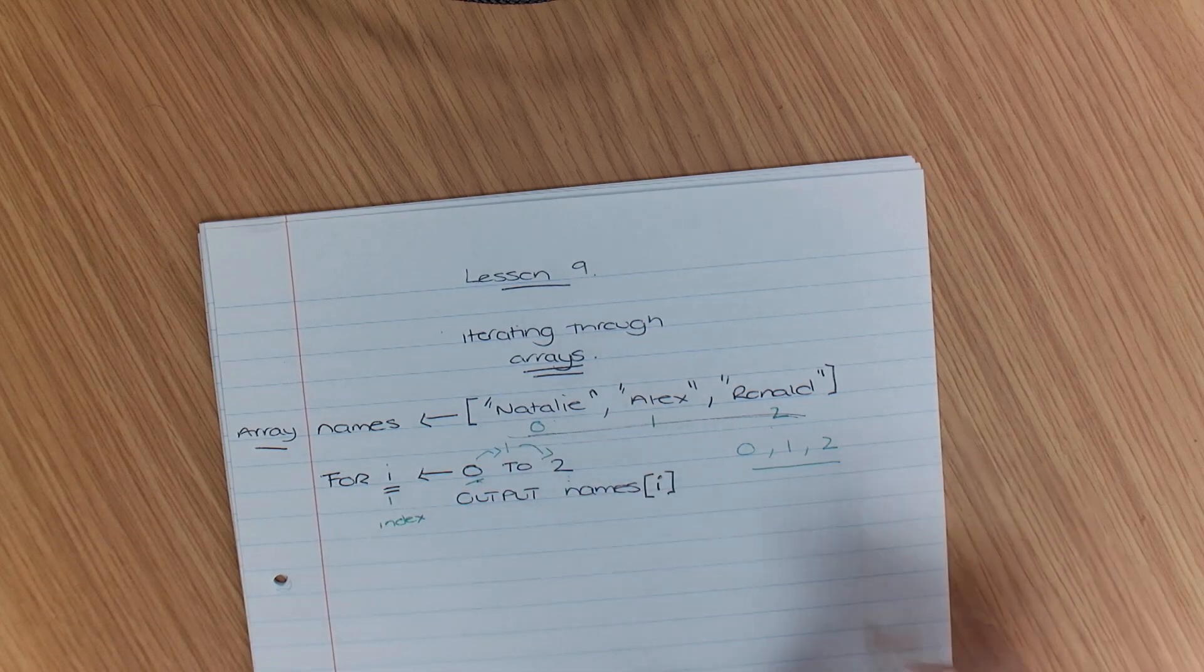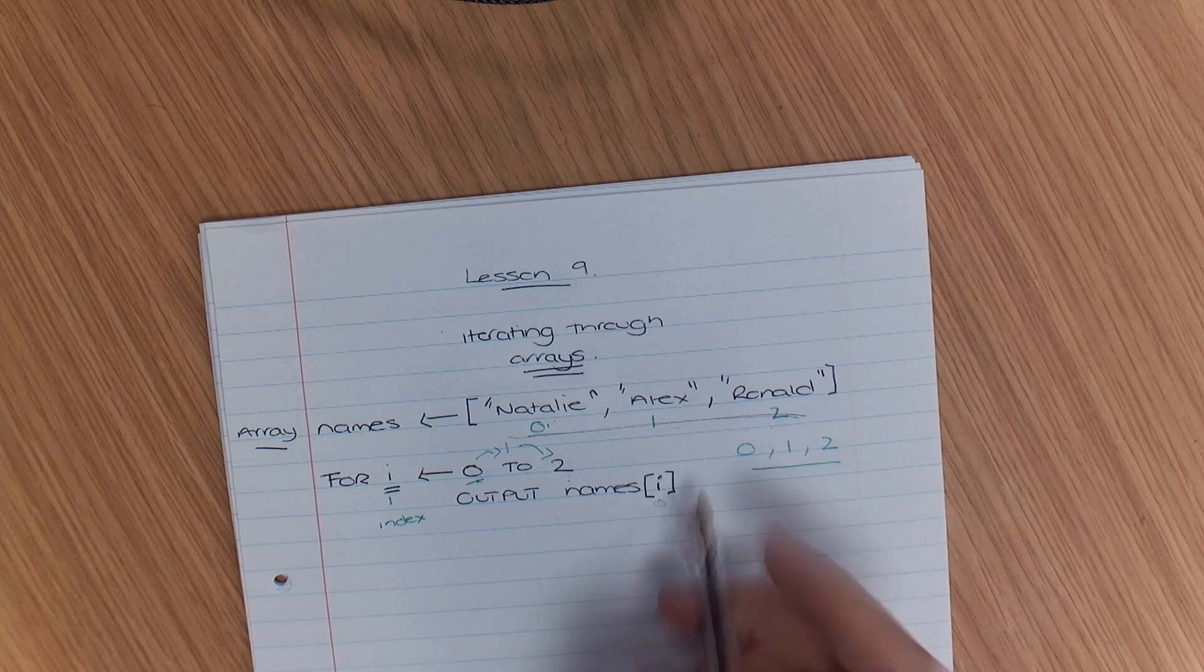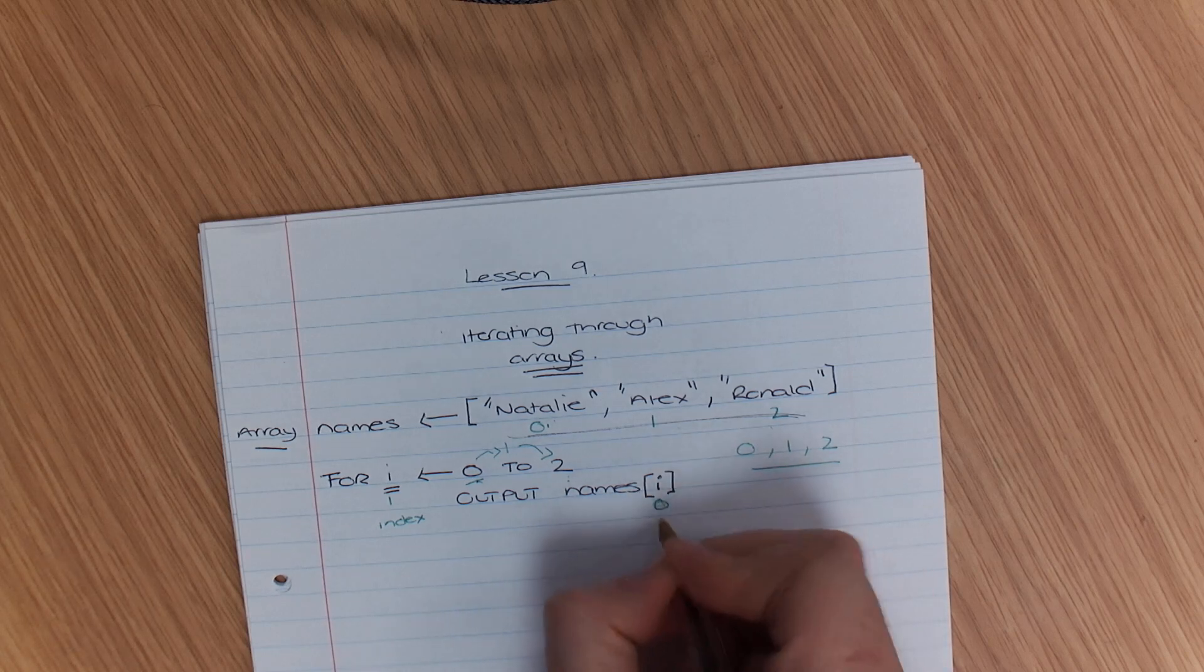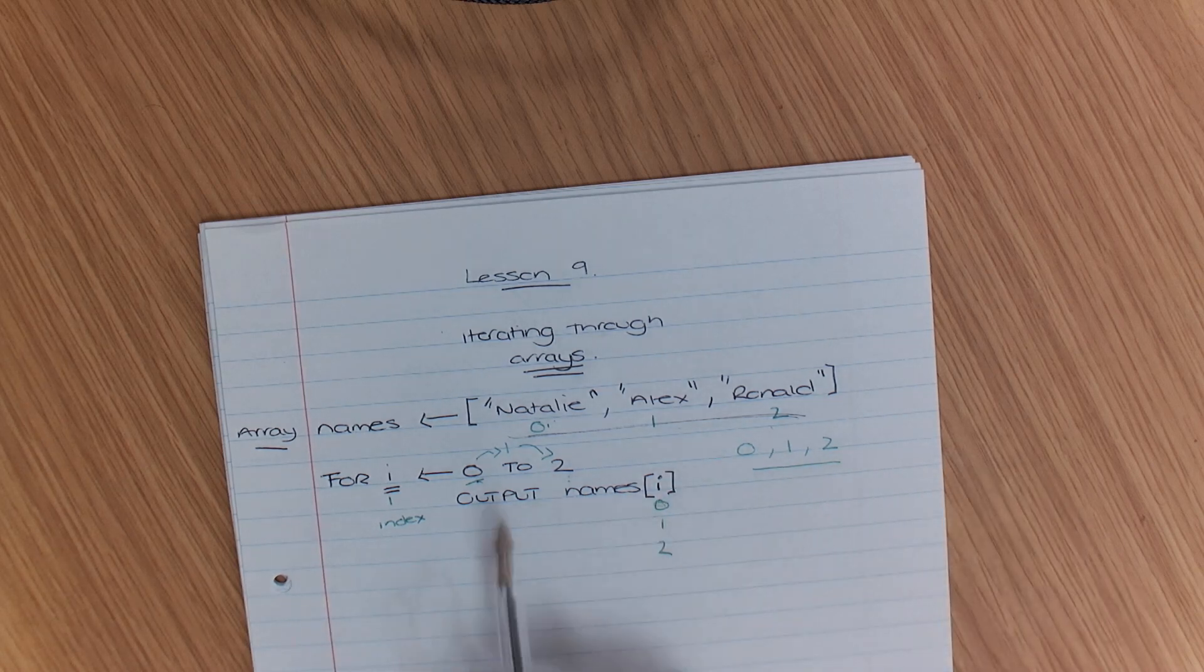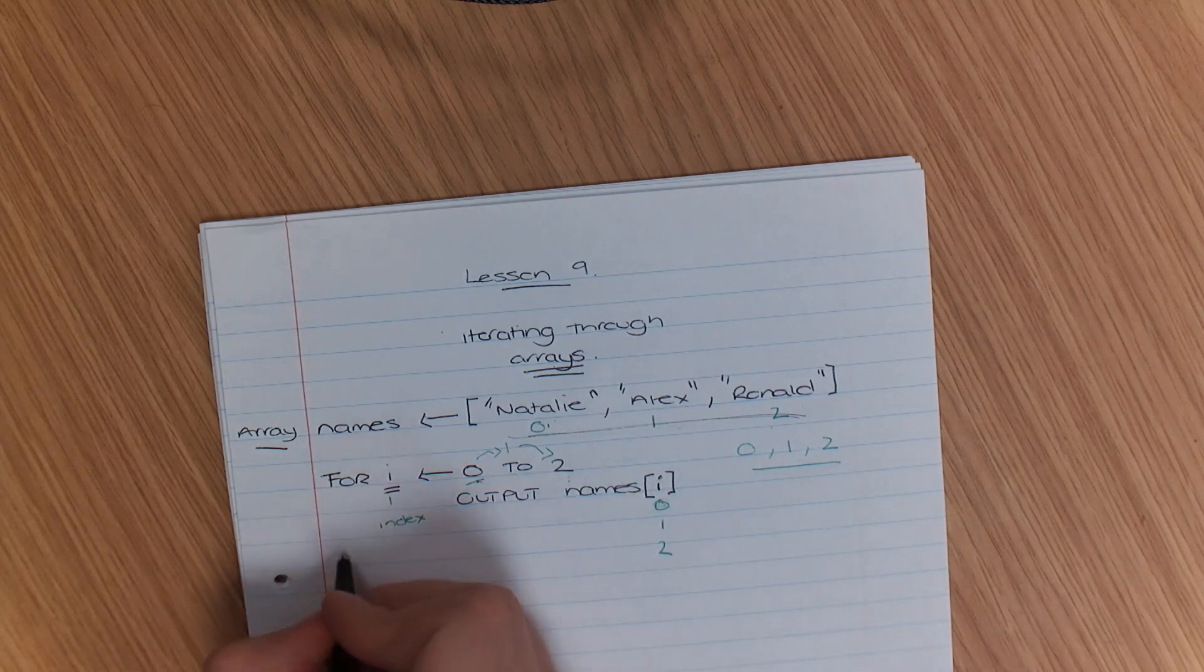So Natalie, that would be equal to 0, then 1, then 2. And that's how we can iterate through that. And then I can do end for.